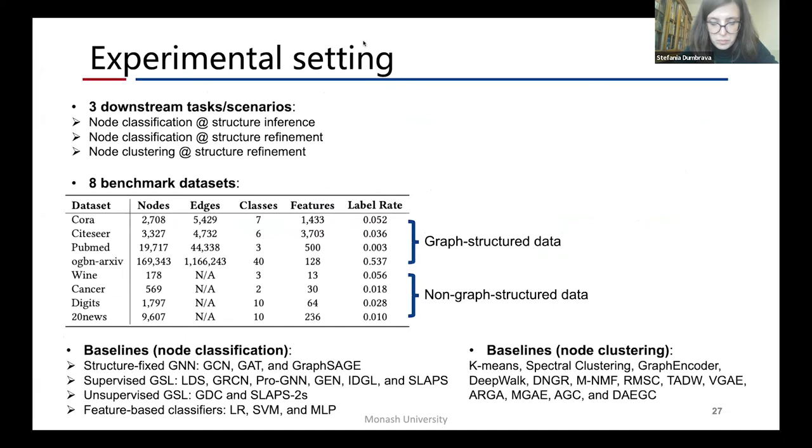To validate the effectiveness of the proposed sublime method, we conduct experiments on three downstream tasks and scenarios, which are node classification at structural inference, node classification at structural refinement, and node clustering at structural refinement. We evaluate our method on eight benchmark datasets, including four graph structure datasets: Cora, CiteSeer, PubMed, and OGBN archive, and four non-graph structure datasets from SK-Learn.